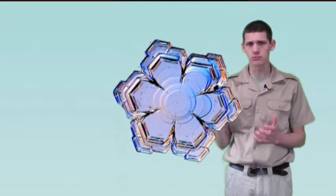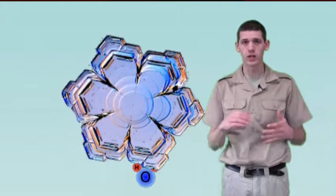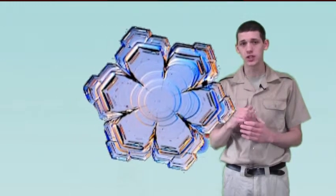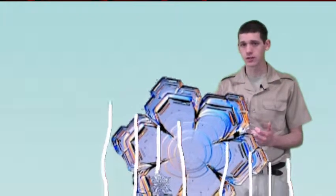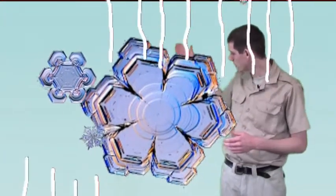As the snowflake gathers more and more moisture, causing it to grow more and more, it eventually becomes too heavy for the air to support it, which is when it starts to snow out. As the snowflake falls from the clouds,